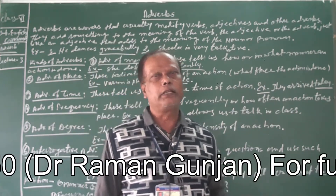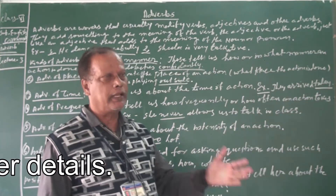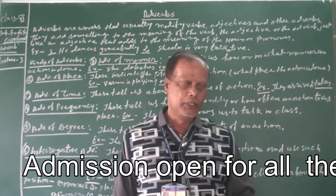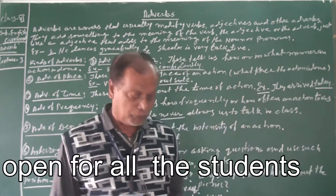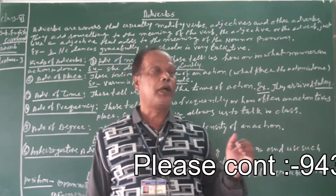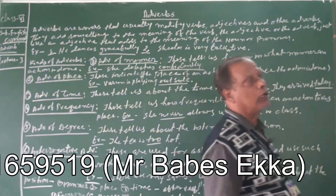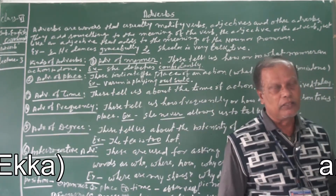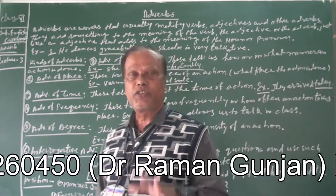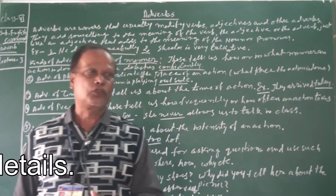With WH questions, you cannot answer in yes or no — you must provide the specific information asked. With auxiliary verb questions, the answer is only yes or no, and you cannot find out the reason, place, time, etc. Therefore, we start with a question word — that WH combination — and these are known as WH questions.